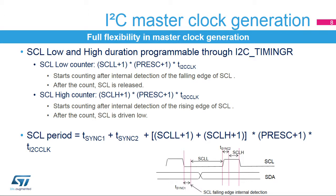These delays, T-SYNC1 and T-SYNC2, depend on the SCL falling or rising edge, the input delay due to the filters, and the delay due to the internal SCL synchronization with the I2C clock. The rising edge depends on pull-up resistor and SCL line capacitance. The falling edge depends on the I/O port parameters defined in the datasheet. In order to properly configure clock speed, these edges can be either measured or calculated.